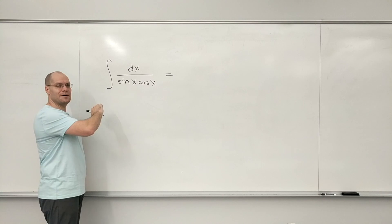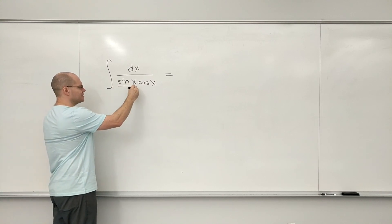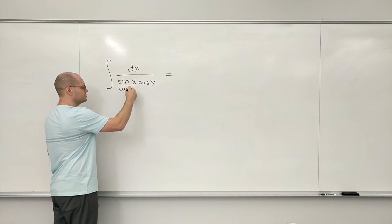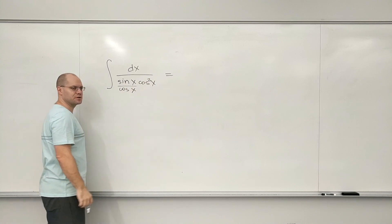How about, in the denominator, divide by cosine of x to produce tangent, and multiply by cosine of x to make up for it.